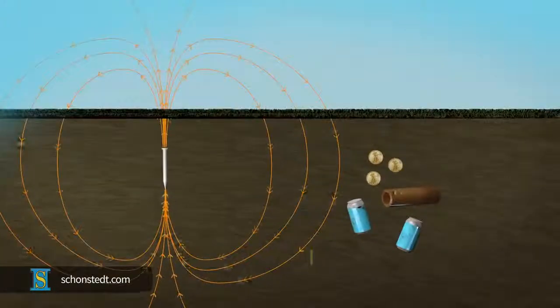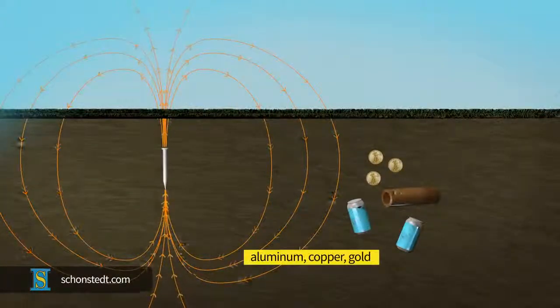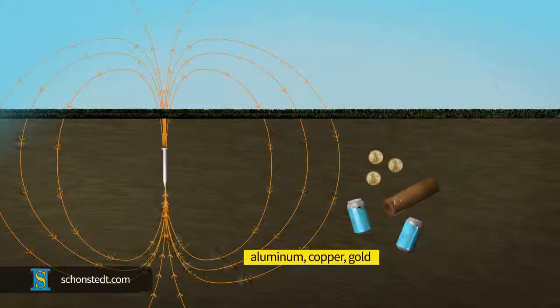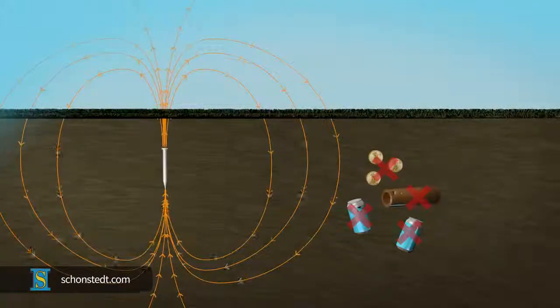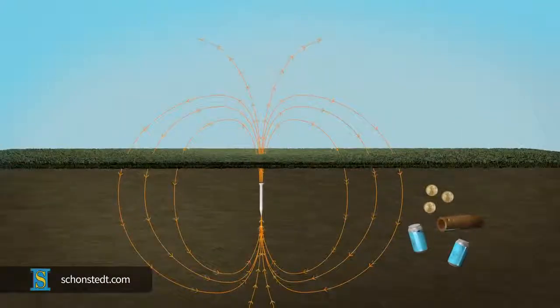By contrast, buried objects made of non-magnetic metals, such as aluminum, copper and gold, are not affected by the Earth's magnetic field, and therefore can't be located by magnetic locators.